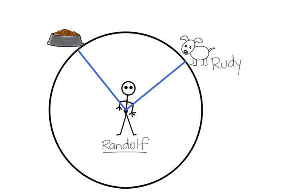Let's look at this diagram of Randolph and his dog Rudy. Randolph is standing at the center of a circle, and on the outside of the circle is Rudy and Rudy's dog dish. Randolph glances at Rudy, and when he does, he's looking at a radius of the circle. Then Randolph spins — he stays at the center and spins around to look at the food dish, which is another radius. When Randolph spun from looking at Rudy to looking at the food dish, he spun a certain number of degrees, and we call that a central angle of the circle.